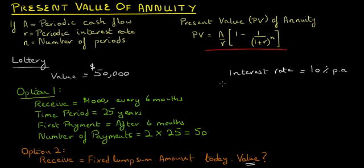Since there are two payment periods per year, the periodic interest rate equals 10% per annum divided by 2, which equals 5%.